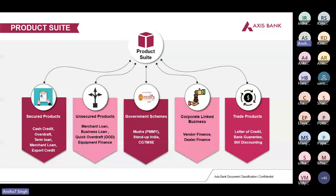Going forward, this is our product suite under SBB. We offer secured products: CC, OD, term loan, and merchant loan. We have unsecured products where we are not asking the customer for collateral: merchant loan, business loan, quick overdraft, and equipment finance. We also cater to government schemes — since we focus on the MSME segment, we provide loans under many government schemes. We also have corporate-linked businesses or supply chain finance, and trade products like LC, BG, LER, and bill discounting.